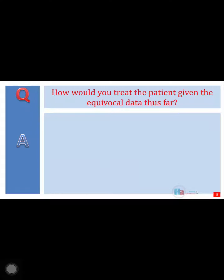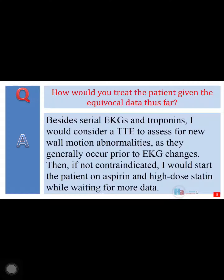How would you treat the patient given the equivocal data thus far? Besides serial EKGs and troponins, I would consider a transthoracic echo to assess for new wall motion abnormalities, as they generally occur prior to EKG changes. Then, if not contraindicated, I would start the patient on aspirin and high-dose statin while waiting for more data.